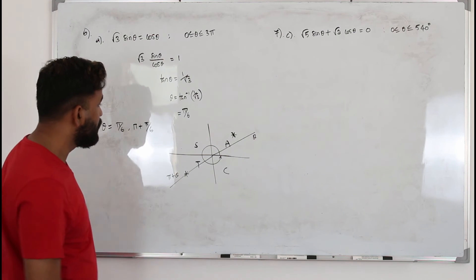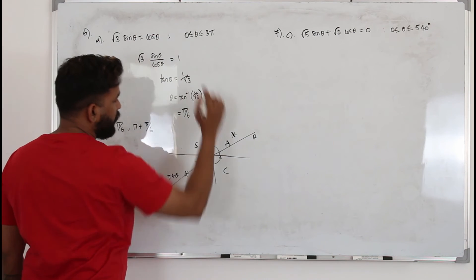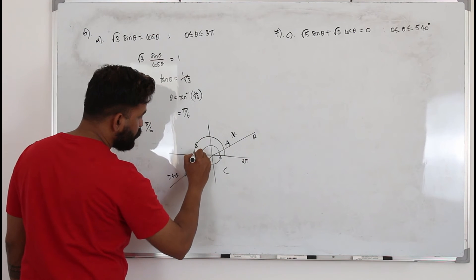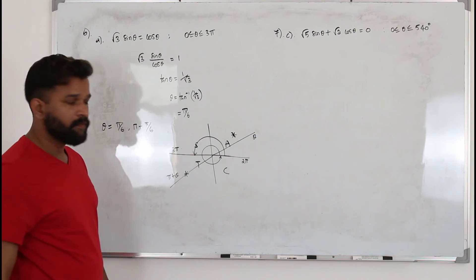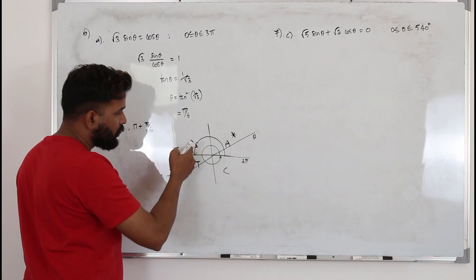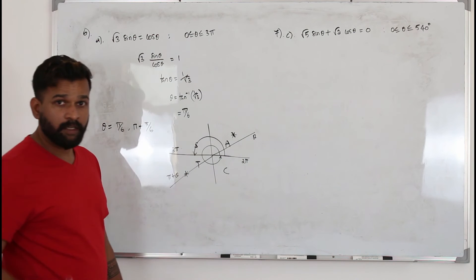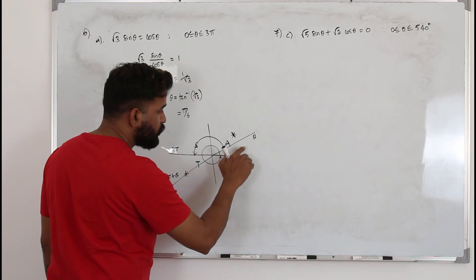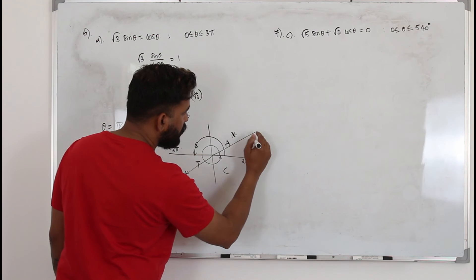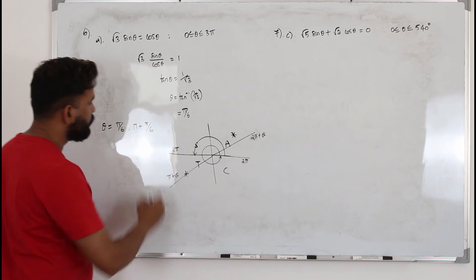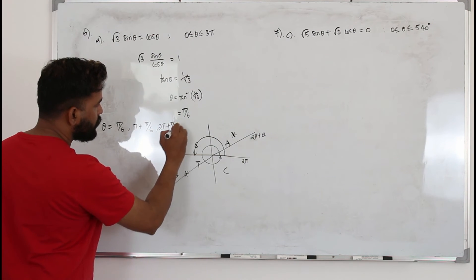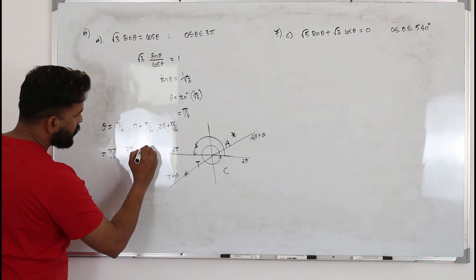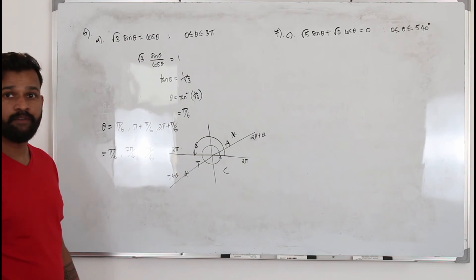We are not done because the limit is 0 to 3π. After 2π, we need to continue to 3π — that's another half cycle covering quadrants 1 and 2. Tan θ is positive in quadrant 1 of this new cycle, and we are now starting from 2π, so the angle is 2π + θ. That gives a third solution. Your three solutions are π/6, 7π/6, and 13π/6.